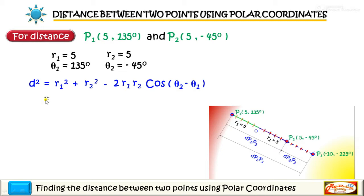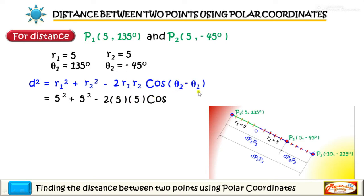So we have R1 equal to 5, raised to the square, plus R2 which is 5, raised to the square, minus twice the product of R1 which is 5 multiplied by R2 which is also 5, multiplied by cosine of theta 2 minus theta 1, that is negative 45 minus 135.